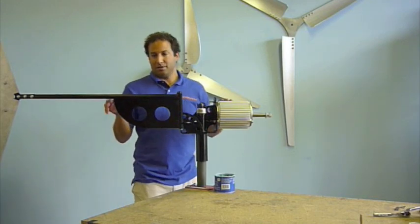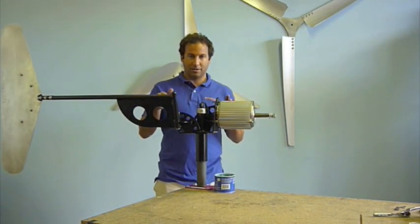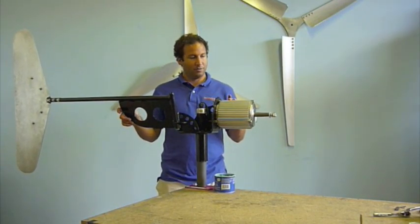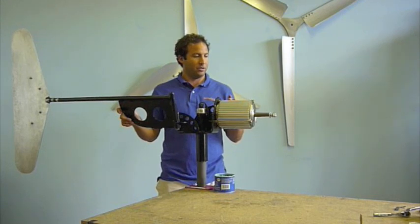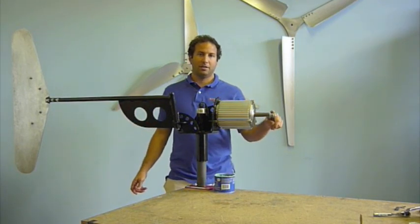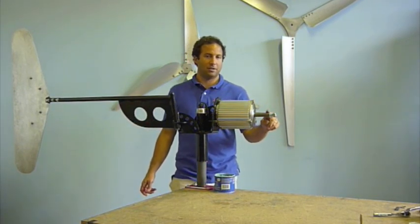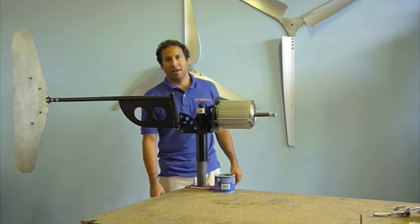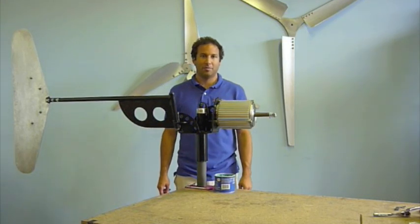All right, so at this point the tail assembly has been attached to the pivot bar and we're ready to move on to the blazing hub. We just need to put the blazing hub onto the generator and we are done assembling the wind turbine.